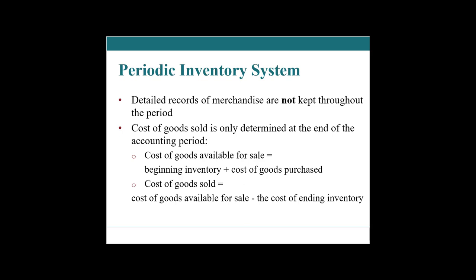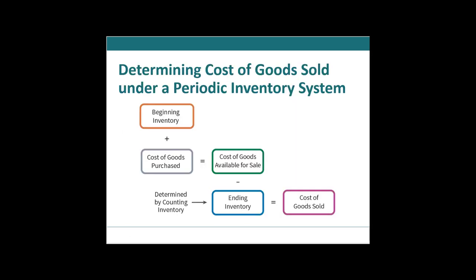In picture format: beginning inventory plus all purchases equals goods available for sale. We then count our inventory, and the difference is our cost of goods sold. Under this method, we do not need a separate journal entry for shrinkage, because counting inventory at the end inherently captures an amount for shrinkage.